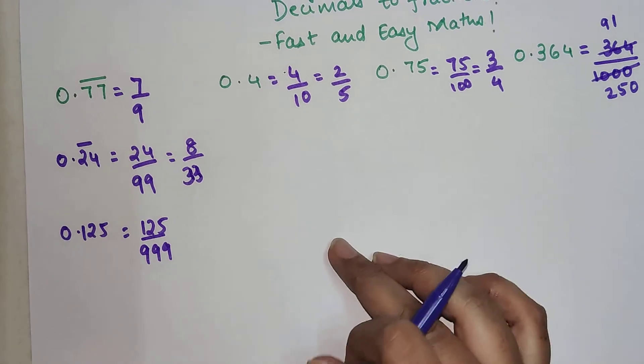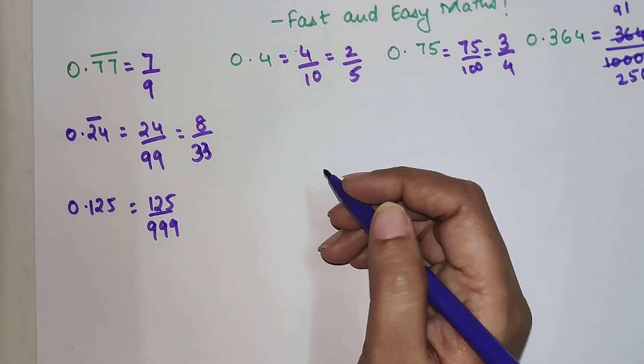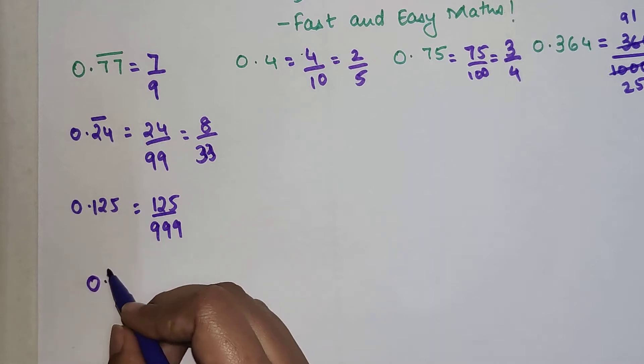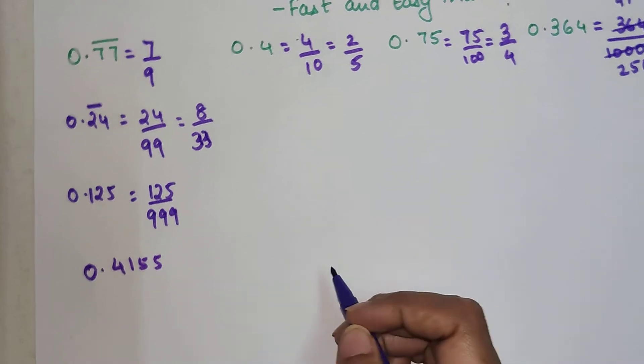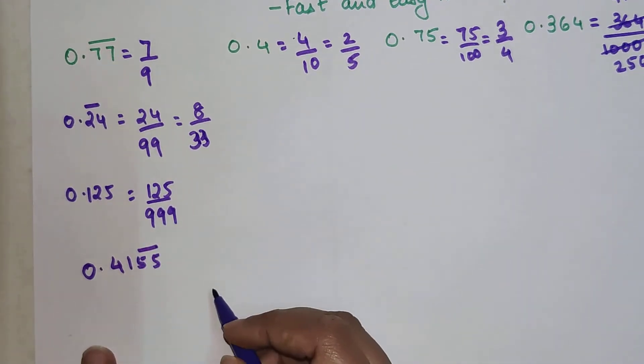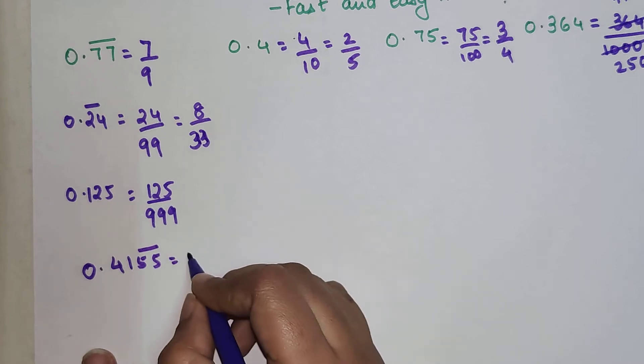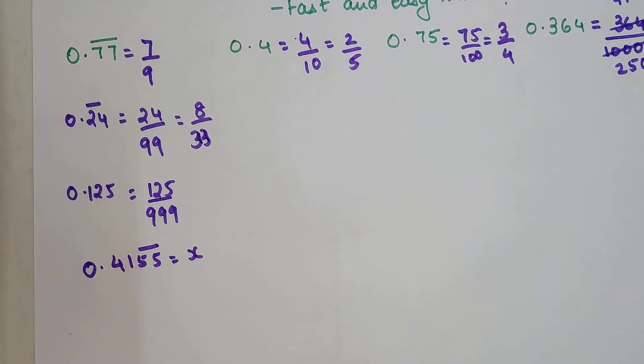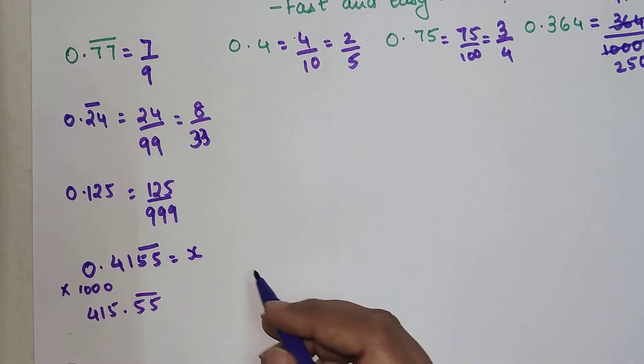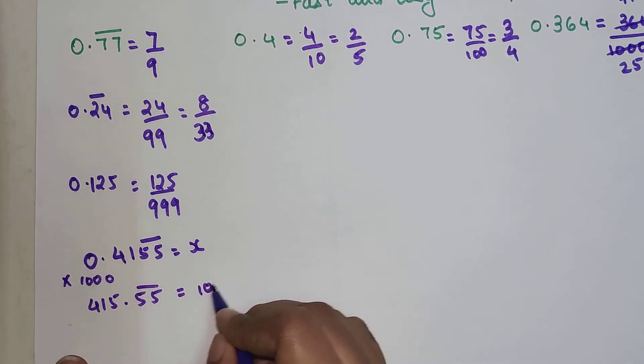You might be wondering what will happen if the question had, let's say, 0.4155 and 555 are repeating. Basically this is the repeating part. Then what we will do is first we will make this x. And then the next step is we should multiply this in such a format that after the decimal point we just have the recurring part. So if we multiply this with 1000, we will get 415.555. This is going to get you 1000x.